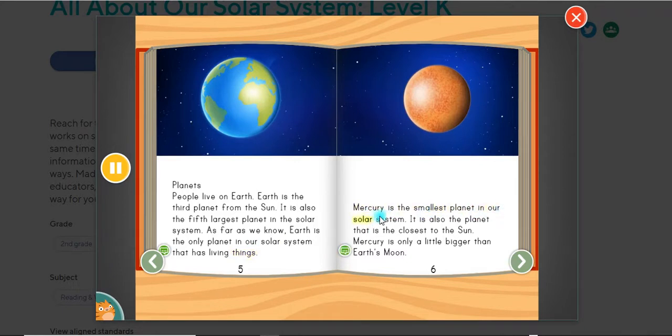Mercury is the smallest planet in our solar system. It is also the planet that is the closest to the Sun. Mercury is only a little bigger than Earth's Moon.